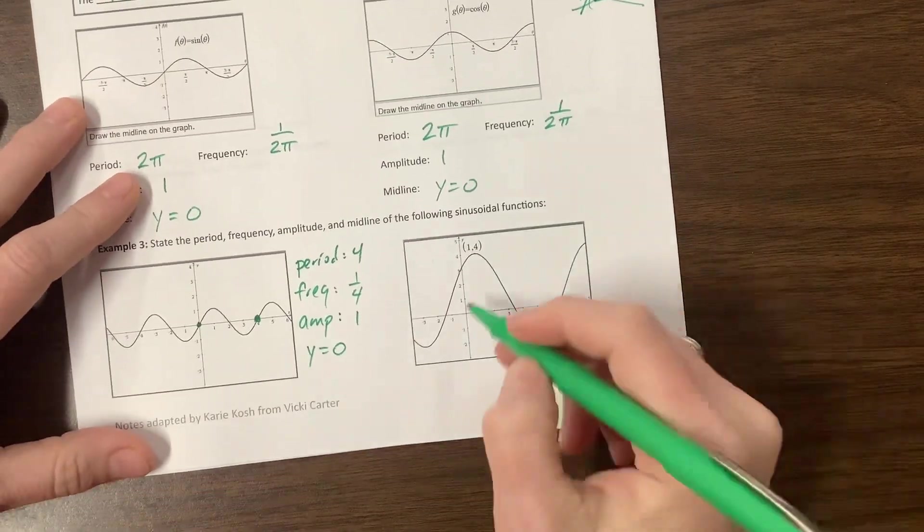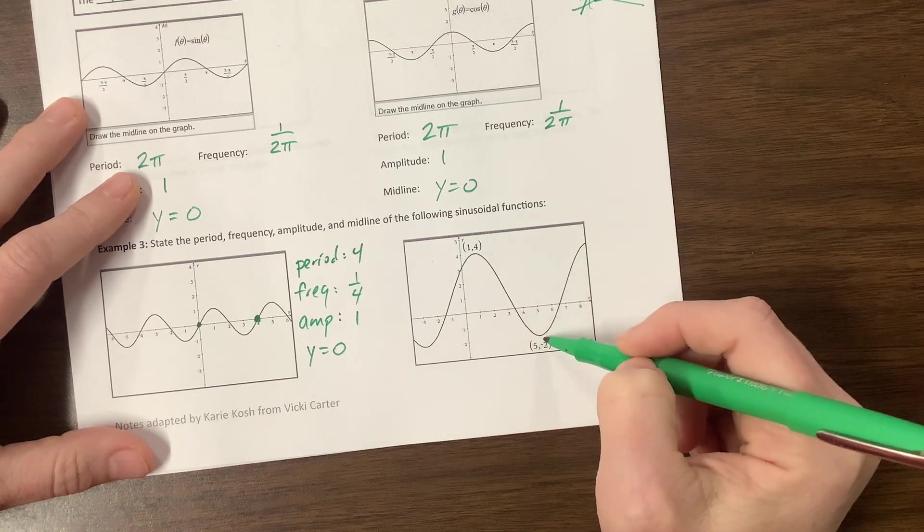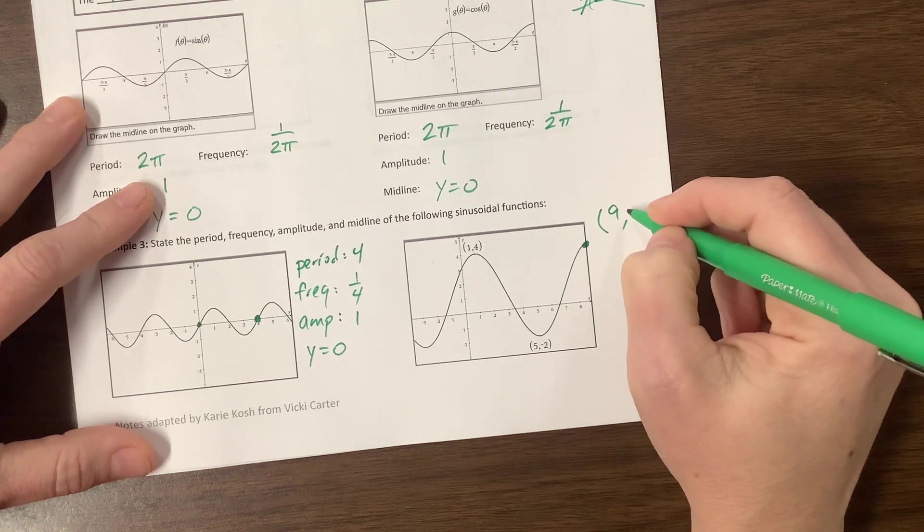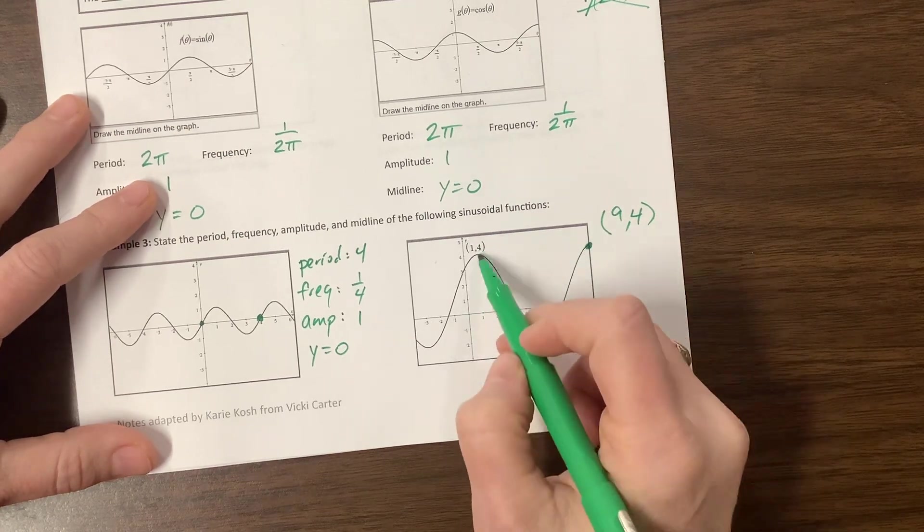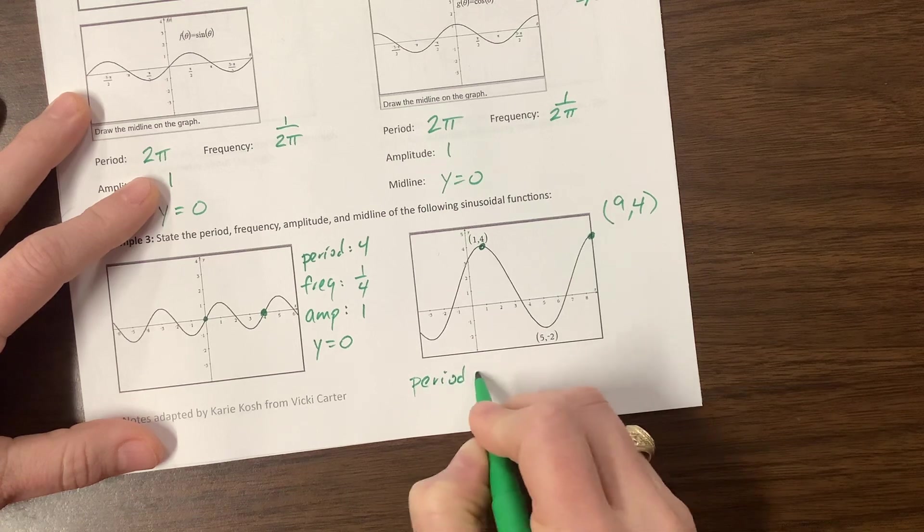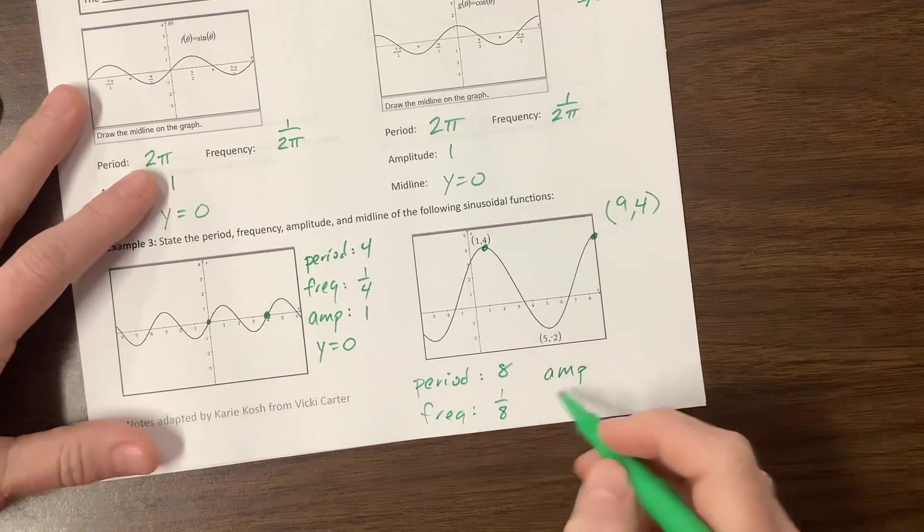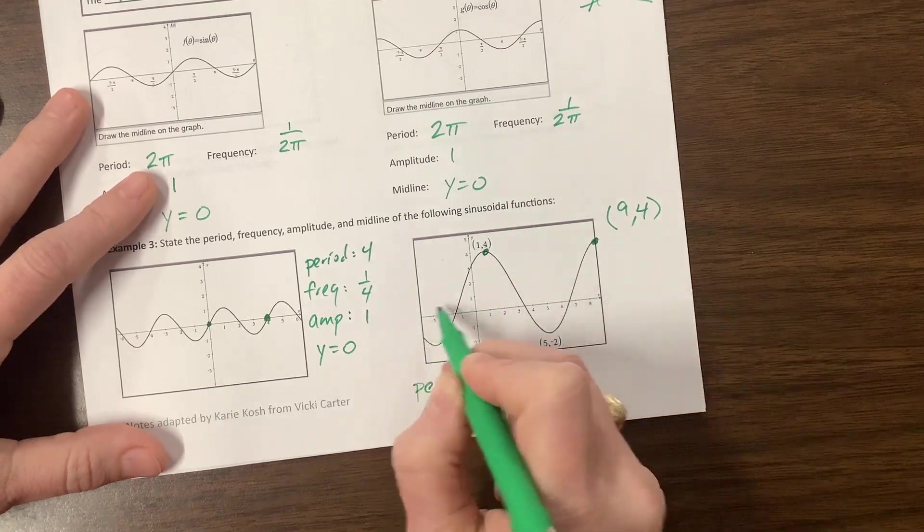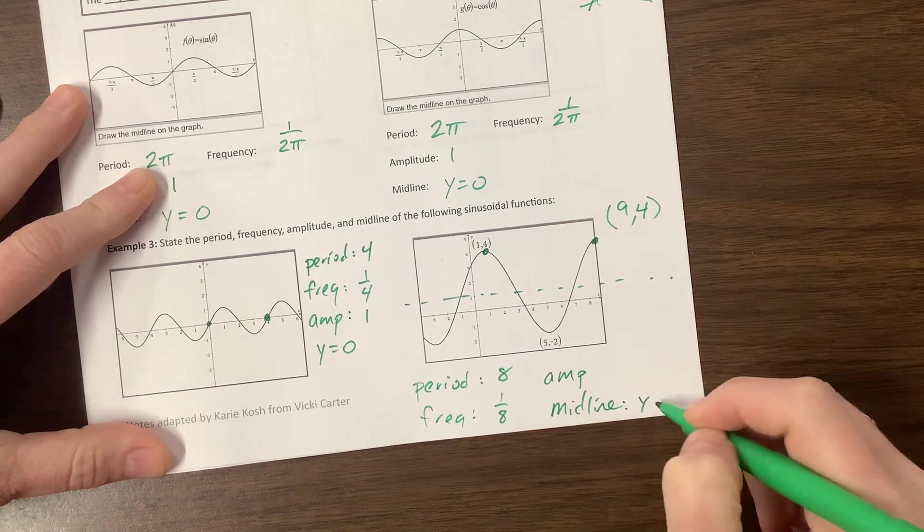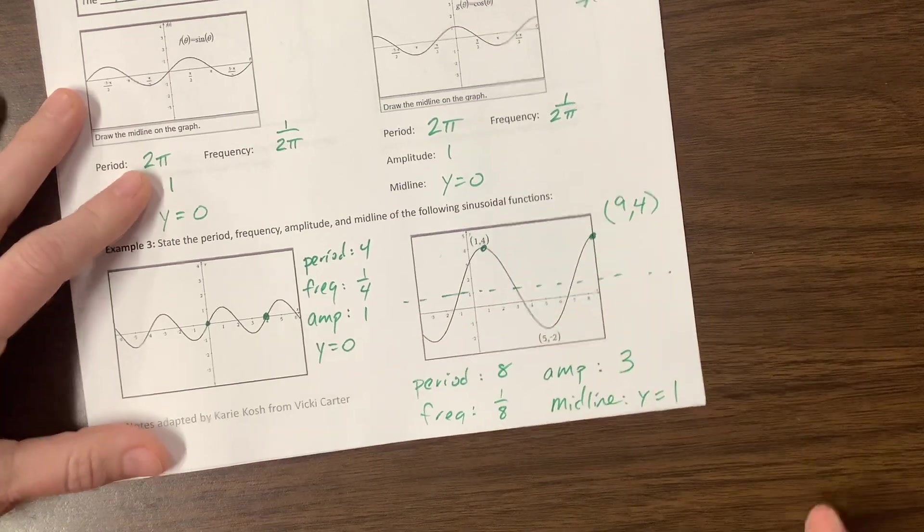This next one—what I notice is that we're at one at the top of the hill and at five at the bottom of the hill, which means we've gone four units. We're gonna have to go four more units, so this would be the point nine comma four. How long did it take to do everything? If we went from one to nine, that's eight units. So our period for this one is eight, therefore our frequency is the reciprocal, one over eight. Our amplitude—we were as low as negative two and as high as four, which means that the average of those is one. So our midline is y equals positive one. And how high above the midline were we? We were three units up, and likewise three units down. So our amplitude is three.